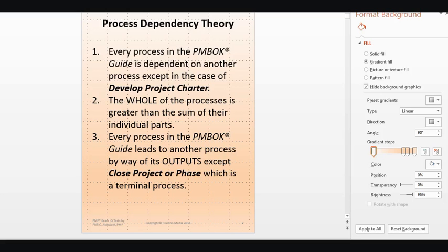Every process in the PMBOK Guide leads to another process by way of its outputs, except Close Project or Phase, which is a terminal process. What that means is, when you get to Close Project or Phase, the outputs don't go to other places — they lead to the organization's repository.